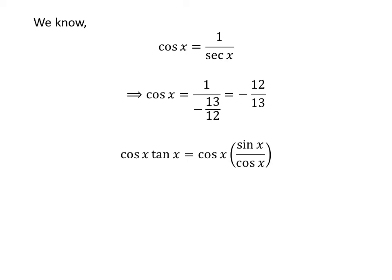Since tangent of x equals sine of x upon cosine of x, multiplying both sides by cosine of x and cancelling the common factor gives us sine of x is equal to cosine of x times tangent of x.